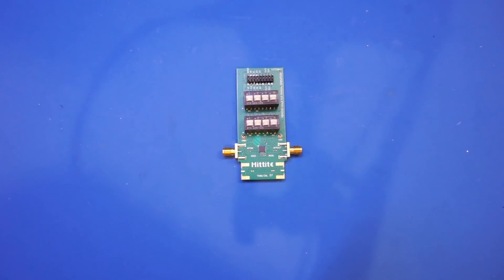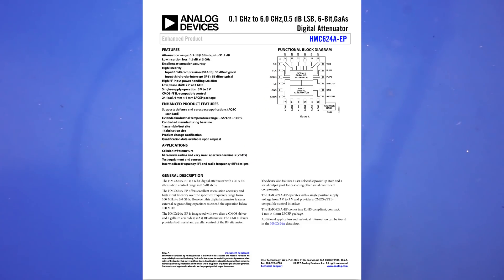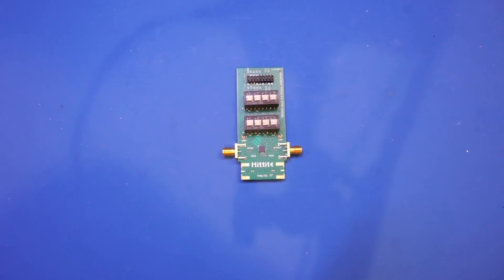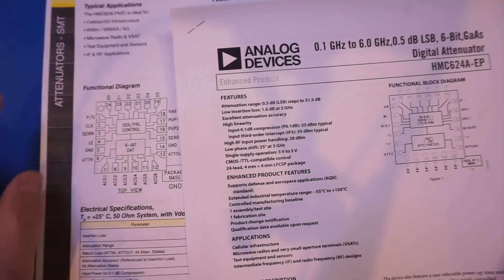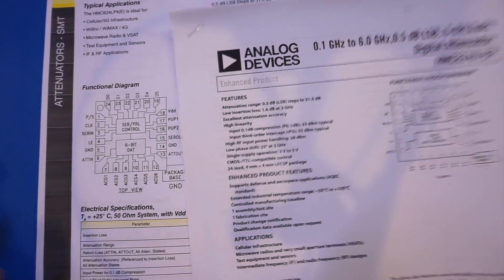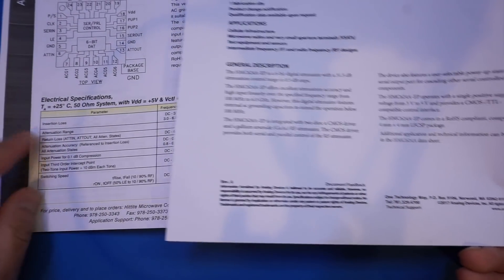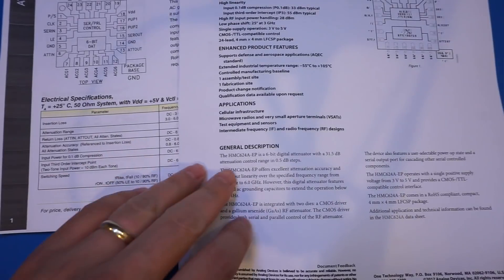Now, of course, this HMC624LP4E chip had become obsolete and had been replaced with HMC624A-EP made by Analog Devices. And I wonder if the discontinuation of this part had more to do with Hittite's acquisition by Analog Devices back in 2014 rather than anything else, because if you compare the datasheet for these two chips, which I have printed out here, you will see that the functional diagrams and the pinouts, they are exactly identical.